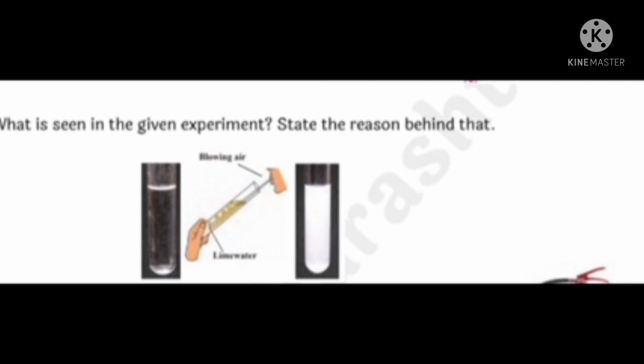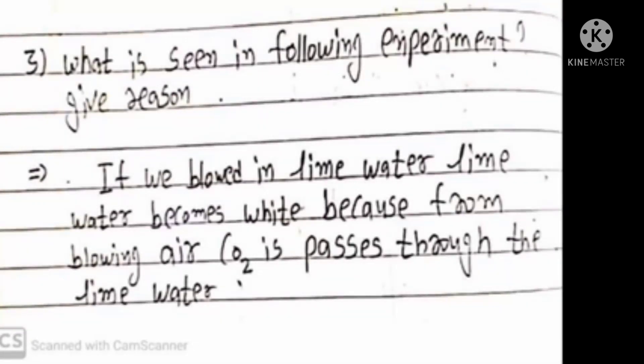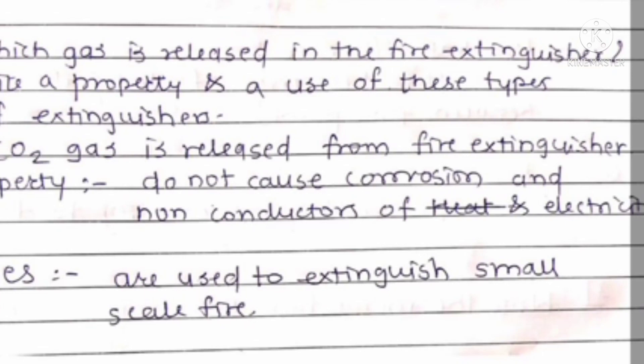Third question: What is seen in the given experiment? State the reason behind that. Answer: If we blow in lime water, the lime water becomes white because from blowing air, carbon dioxide passes through the lime water.